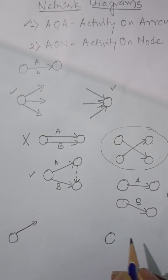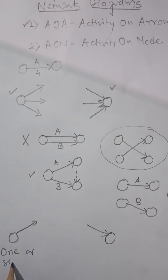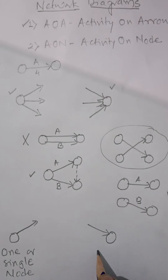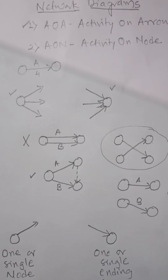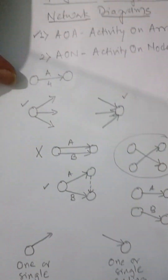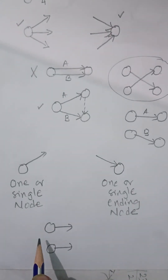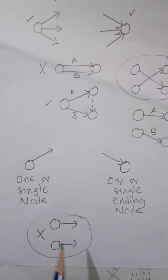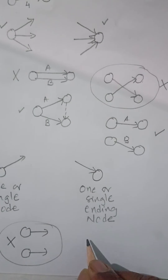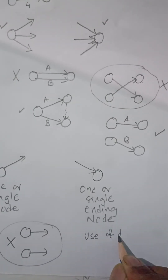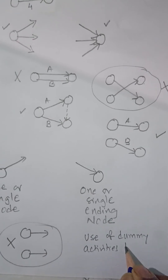Every project must have one single starting node, and the entire project must also end in one single node. You should not have two different starts for a project — this is not acceptable. Additionally, the use of dummy activities should be minimized; use them only when forced to.